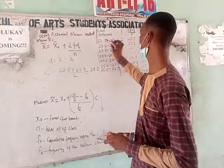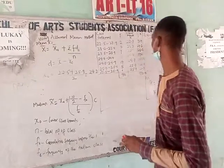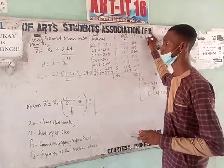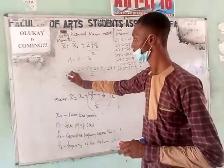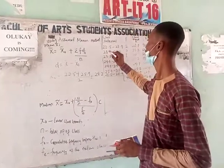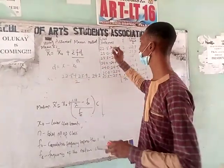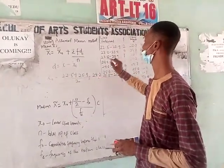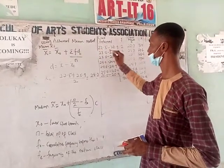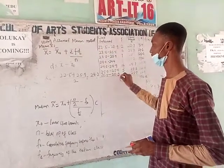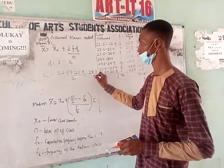Now to pick your table, this is your deviation, your assumed mean. So this is your assumed mean. Now to find the value, to get your assumed mean value, you need to add your first interval and your last interval, then you divide the value.